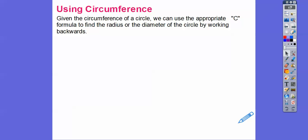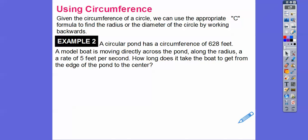All right. So given the circumference of a circle, we can approximate C formula to find the radius or the diameter of the circle by working backwards. And you're thinking, what? What does that mean? Well, here we go.